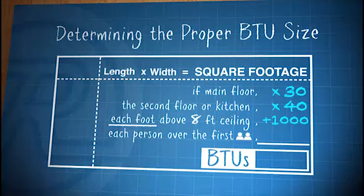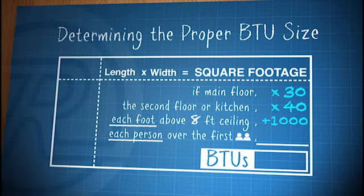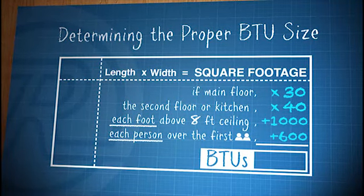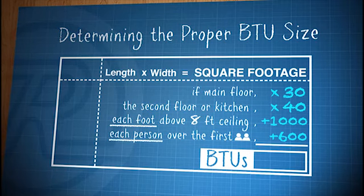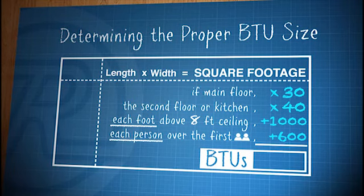You should also take into consideration the number of people in the room. For each person over the first 2 individuals, you must add an additional 600 BTUs to your formula.